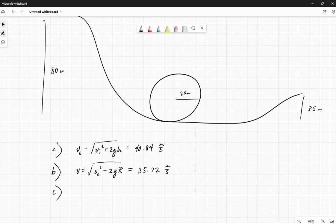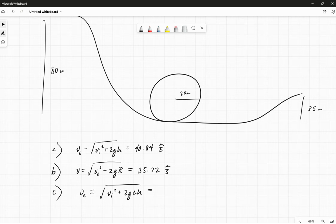Part C, how fast is it going at the end of the run? So basically, the final speed at the end we'll have is going to be like the initial speed squared plus 2 times G times the change in overall height here. So that change in overall height is 45 meters, 45 times 9.8 times 2 plus 100, and take the square root. This should be 31.34 meters per second.